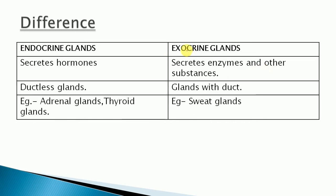Now for the difference between endocrine and exocrine glands: endocrine glands generally secrete hormones, while exocrine glands secrete enzymes and other substances. Exocrine glands have a special duct for their secretions to be poured into the target organ. Other substances secreted by exocrine glands include sweat.